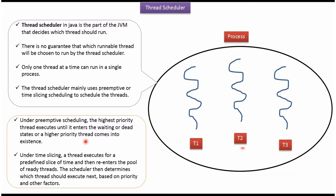Under preemptive scheduling, the Thread Scheduler will first execute the higher priority threads, then the Thread Scheduler will execute the lower priority threads.